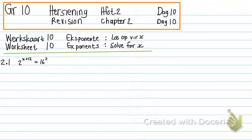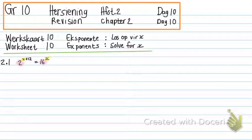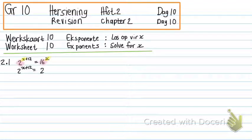Number 1: 2 to the power of X plus 12 is equal to 16 to the power of X. When I see that X is an exponent, I need to make the bases the same. So I am going to take that 16 and get its prime factors. I can use the shift-fact button on my calculator, or I can just know that 16 is 2 to the power of 4. So I substitute 16 with 2 to the power of 4 to the power of X.